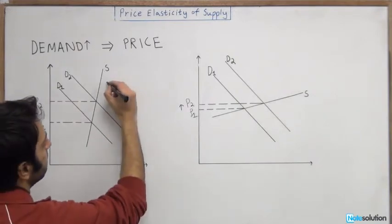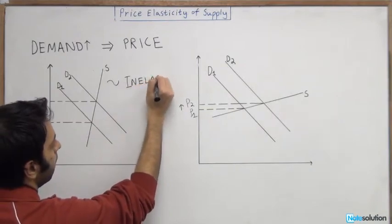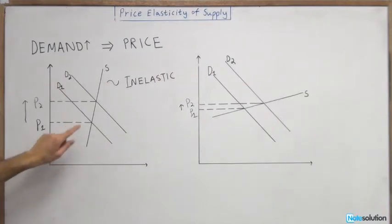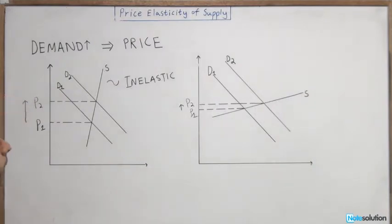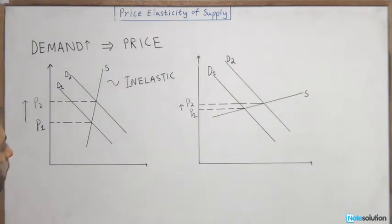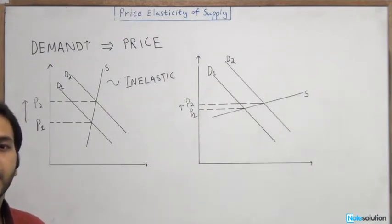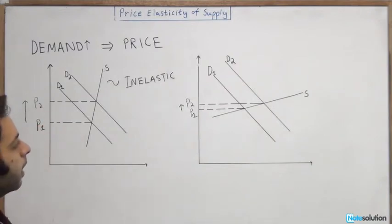So we'll put that down over here saying: inelastic. We see that if the supply curve is inelastic, you will experience a large increase in the price, just because supply is less responsive to changes in price. Whatever the increase in price is not resulting in any increase in the supply, and so that price is just being passed on — resulting in a higher price.